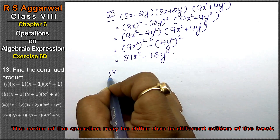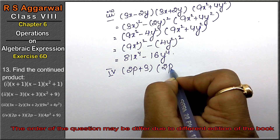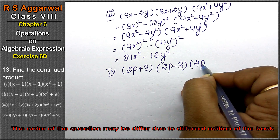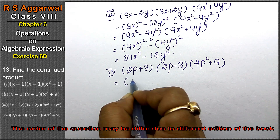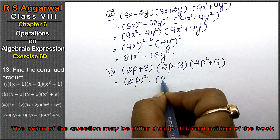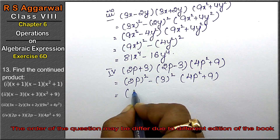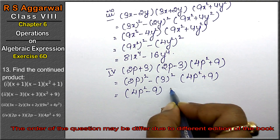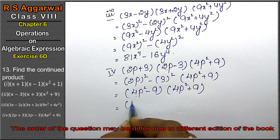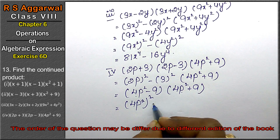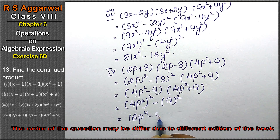Last part: (2p + 3)(2p - 3)(4p² + 9). So (2p + 3)(2p - 3) = (2p)² - 3² = 4p² - 9. Then (4p² - 9)(4p² + 9) = (4p²)² - 9² = 16p⁴ - 81, which is the answer.